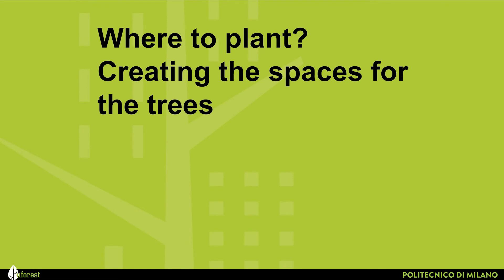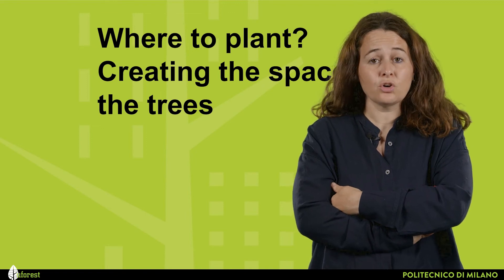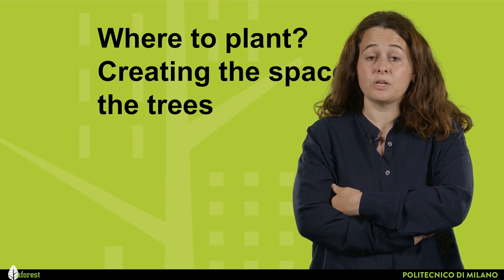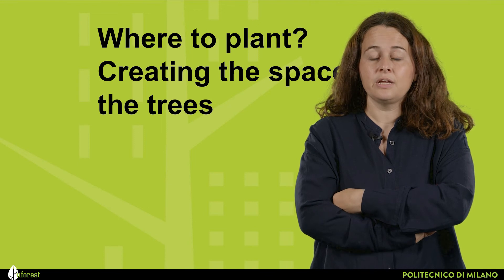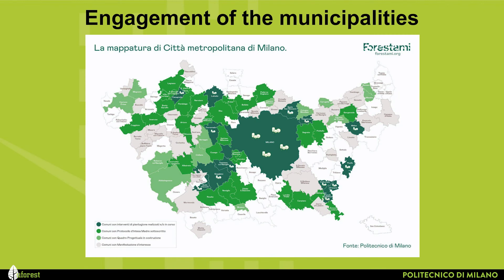Where to plant — creating the spaces for the trees? We map the existing, we map the potential, but it's not enough. We need to map and understand the willingness of the different actors to provide the space for the trees. Therefore, we are daily engaged in discussions with the different municipalities. Our engagement within the metropolitan area of Milan consists of discussion, interaction, engagement, and — where there is willingness to plant — design, within the 133 municipalities included in the metropolitan area. As of 2022, 55 municipalities have already signed a memorandum of understanding to plant trees within FORESTAMI.